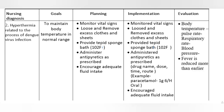Nursing Diagnosis 2: Hyperthermia related to the process of Dengue virus infection. Goals: To maintain body temperature in normal range. Planning: Monitor vital signs. Loosen and remove excess clothes and sheets. Provide tepid sponge bath if temperature is more than 102 Fahrenheit. Administer antipyretics as prescribed.